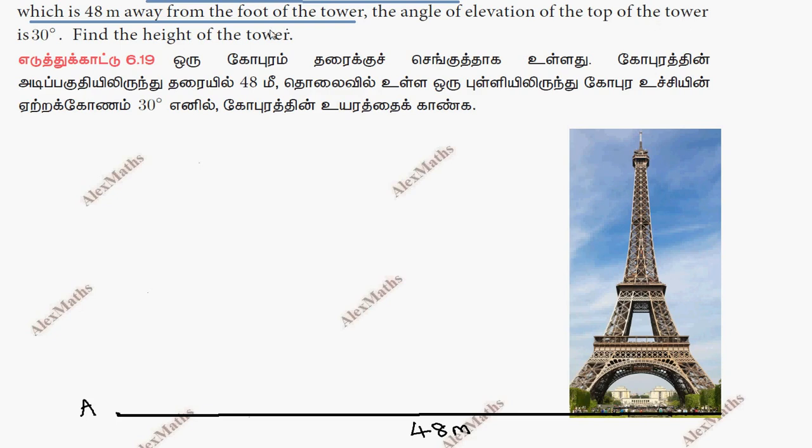The angle of elevation of the top of the tower is 30 degrees. Find the height of the tower. This angle of elevation is 30 degrees. So this is point C. This is height, 30 degrees here.